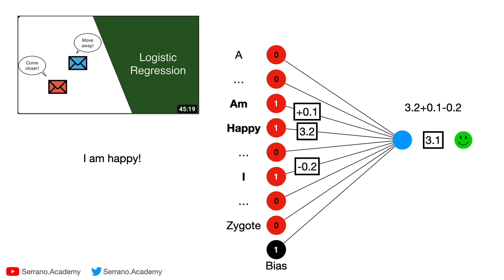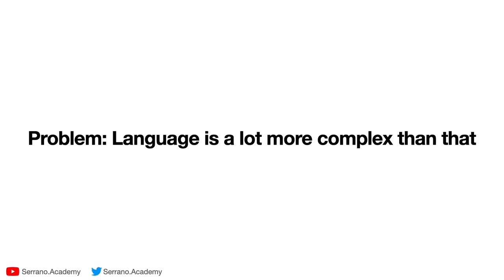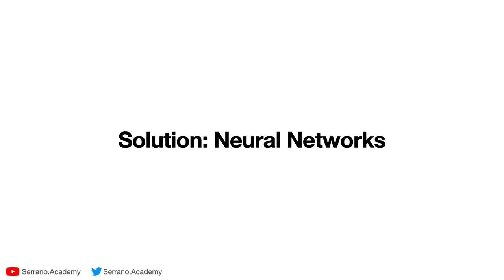The problem is that this won't work all the time because language is much more complex than that. If we could understand language just by adding a number to each word, language would be very simple — but it's not. We need something more complicated, and that's when we jump to neural networks.